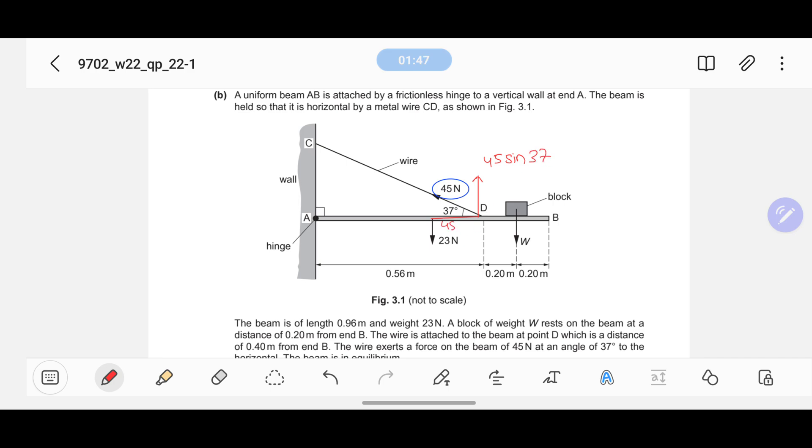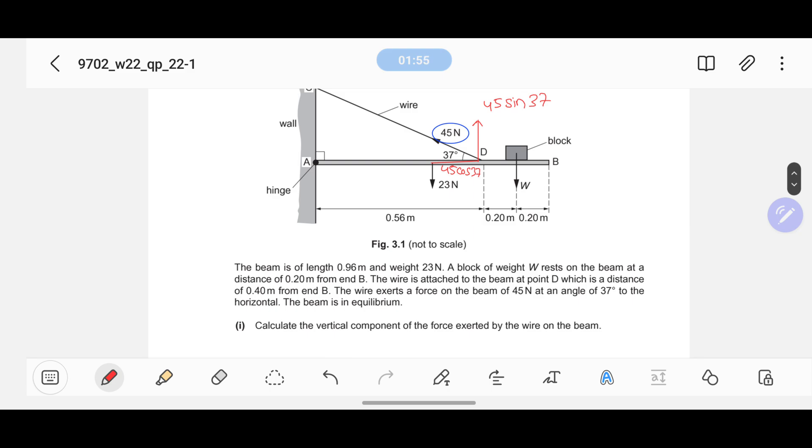The beam is of length 0.96 meters and we have made the partitions. A block of weight W rests on the beam at a distance of 0.2 meter from end B. The wire exerts a force on the beam of 45 Newton at an angle of 35 degrees to the horizontal.